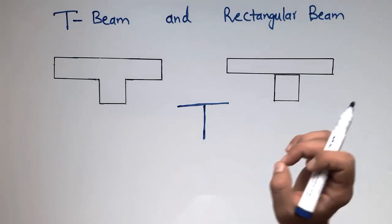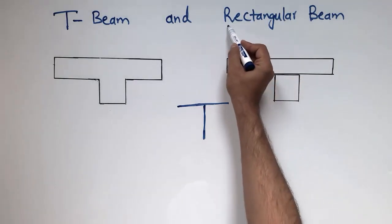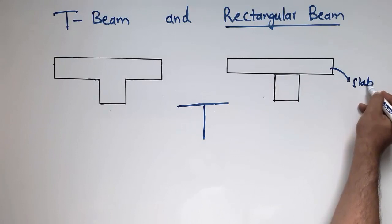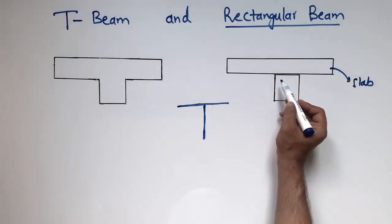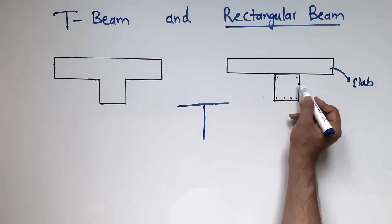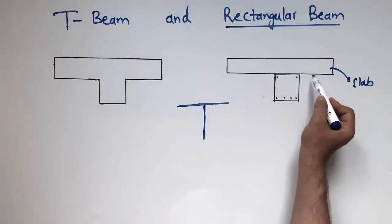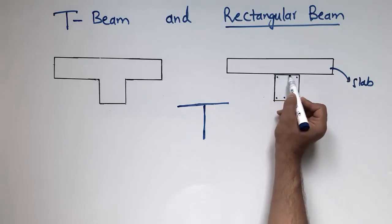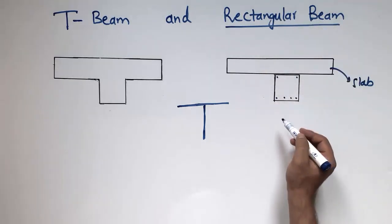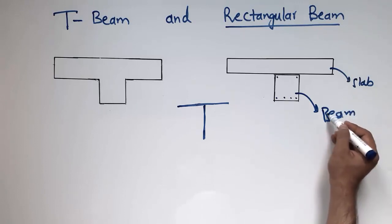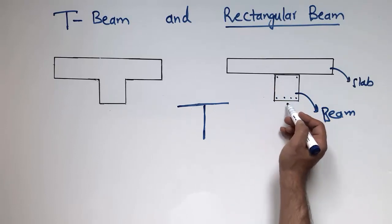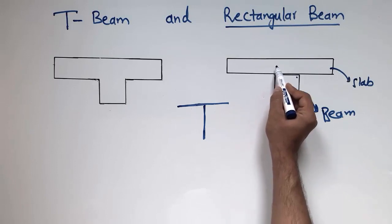First I will explain the rectangular beam. Consider a slab which has been poured with concrete and reinforcement, and this slab is being supported on the beam. There is no joint between the slab and the beam. This is the beam cross-section with the reinforcement provided. This beam supports the slab without any monolithic joint, so this is called a rectangular beam. It should be designed as a rectangular beam because the cross-section of the beam is rectangular.